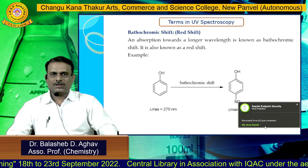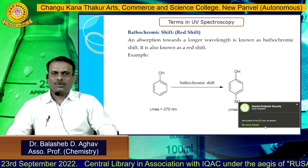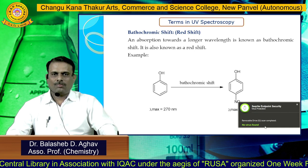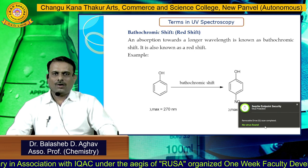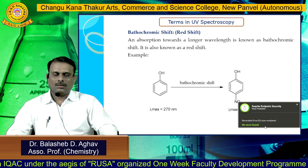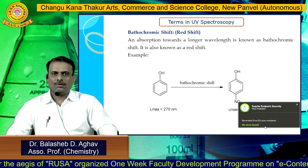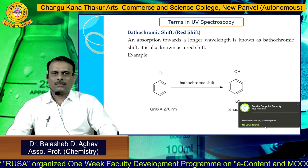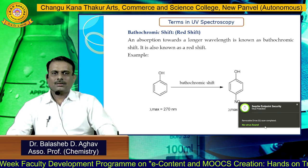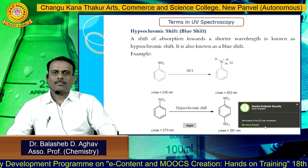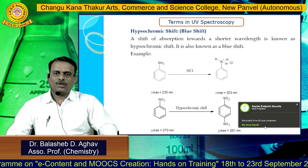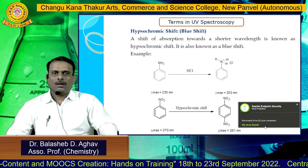Another phenomenon in UV-visible spectroscopy is the bathochromic shift, also known as red shift — it is the shift of absorption towards a longer wavelength. For example, phenol absorbs at 270 nanometers, whereas paranitrophenol absorbs at a longer wavelength — this shift is called the bathochromic shift.